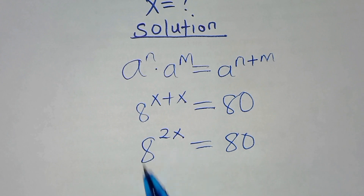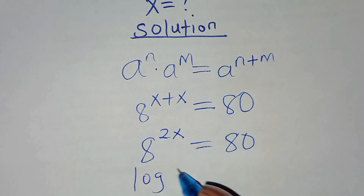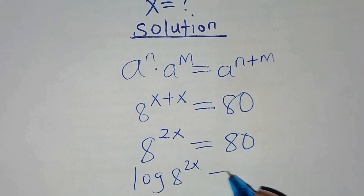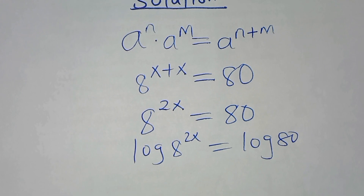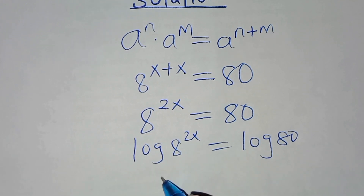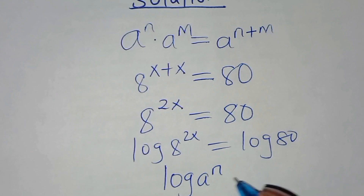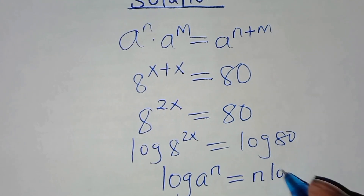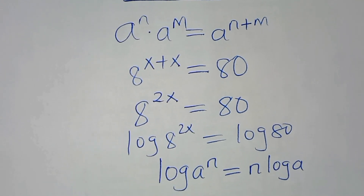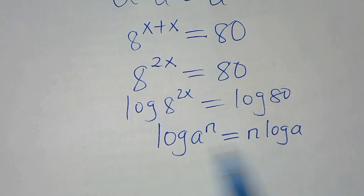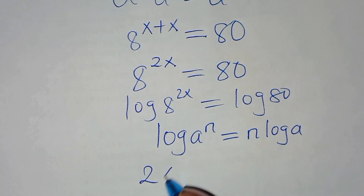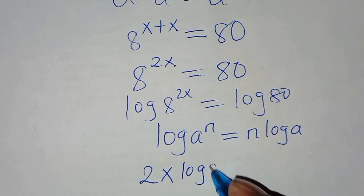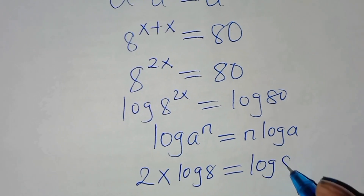To solve for the value of x, we introduce the natural logarithm on both sides, so that we'll have ln(8 to the power 2x), this is equal to ln(80). Now ln(8 to the power 2x) is in the form of ln(a to the power n), which we can express as n·ln(a). Applying this power rule property, we'll have 2x·ln(8) equal to ln(80).